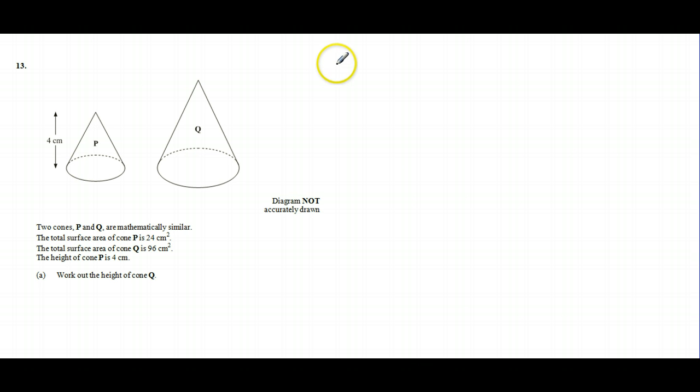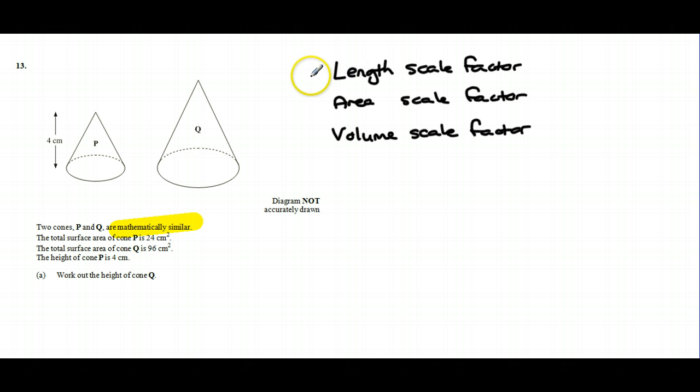What it involves is something called a length scale factor, an area scale factor, and the volume scale factor and how they are related. The key that gives that away in this particular question is the fact it tells you that they are mathematically similar. That's suggesting to you that these cones is just one's enlargement of the other.